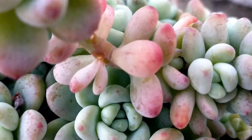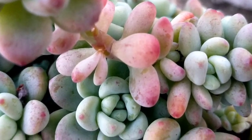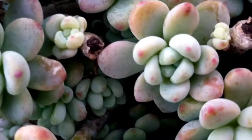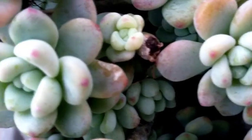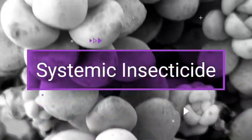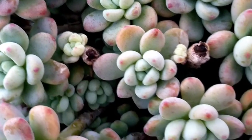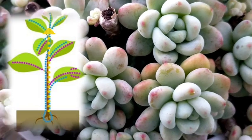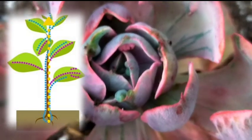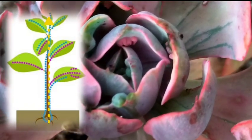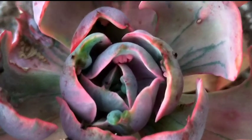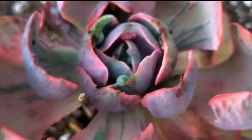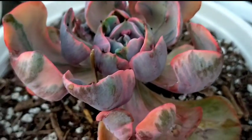Hello everyone, welcome to our YouTube channel. Today we're gonna be talking about systemic pesticides or insecticides. The very first thing we need to know is to understand what our systemic insecticides are. Kapag sinabi nating systemic insecticide, these are kinds of pesticide that are absorbed by our plant and distributed all throughout the tissues of our plant or succulent until it reaches the stem, the leaves, the roots, and even the flowers of the particular plant.